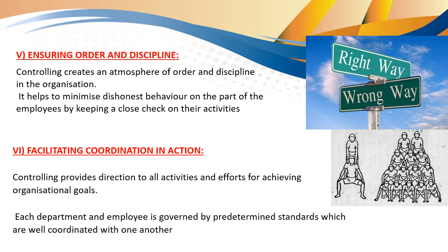The fifth is ensuring order and discipline. You tell the employee the standard performance of 100 emails they need to achieve, setting an order and discipline so they know what they need to do. This creates an atmosphere of order and discipline in the organization and helps to minimize dishonest behavior. Employees will not be able to cheat the organization because of the rules and regulations in place — the management and employees know which is the right way and which is the wrong way.